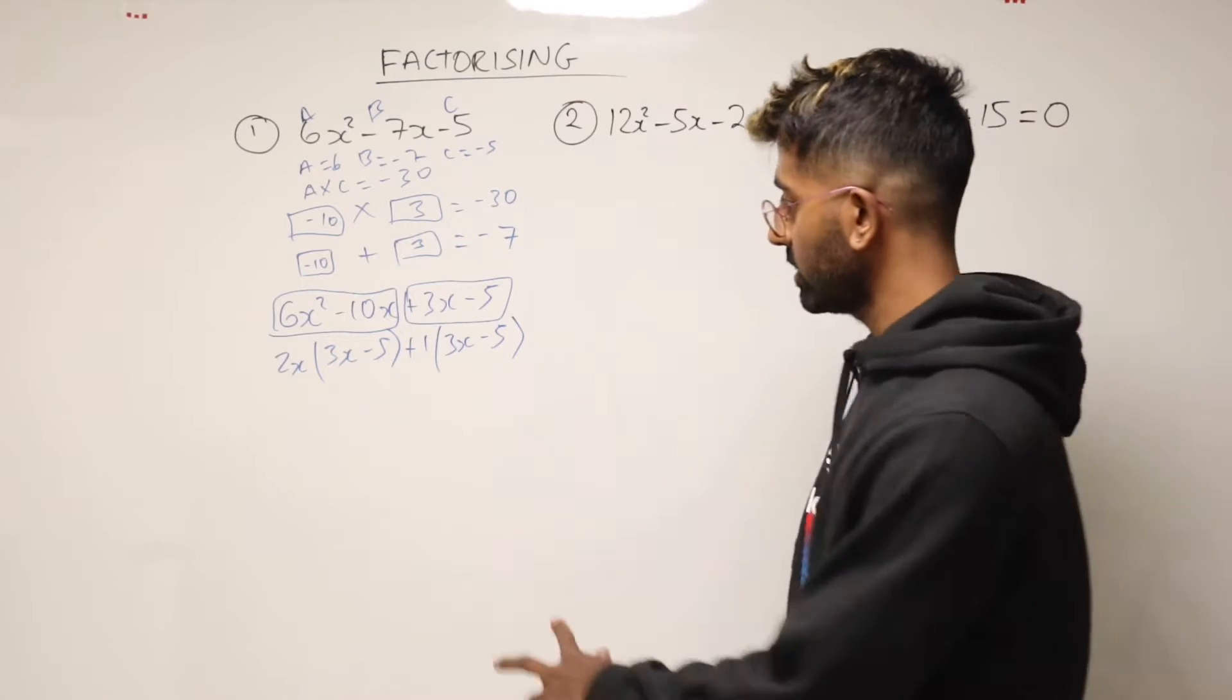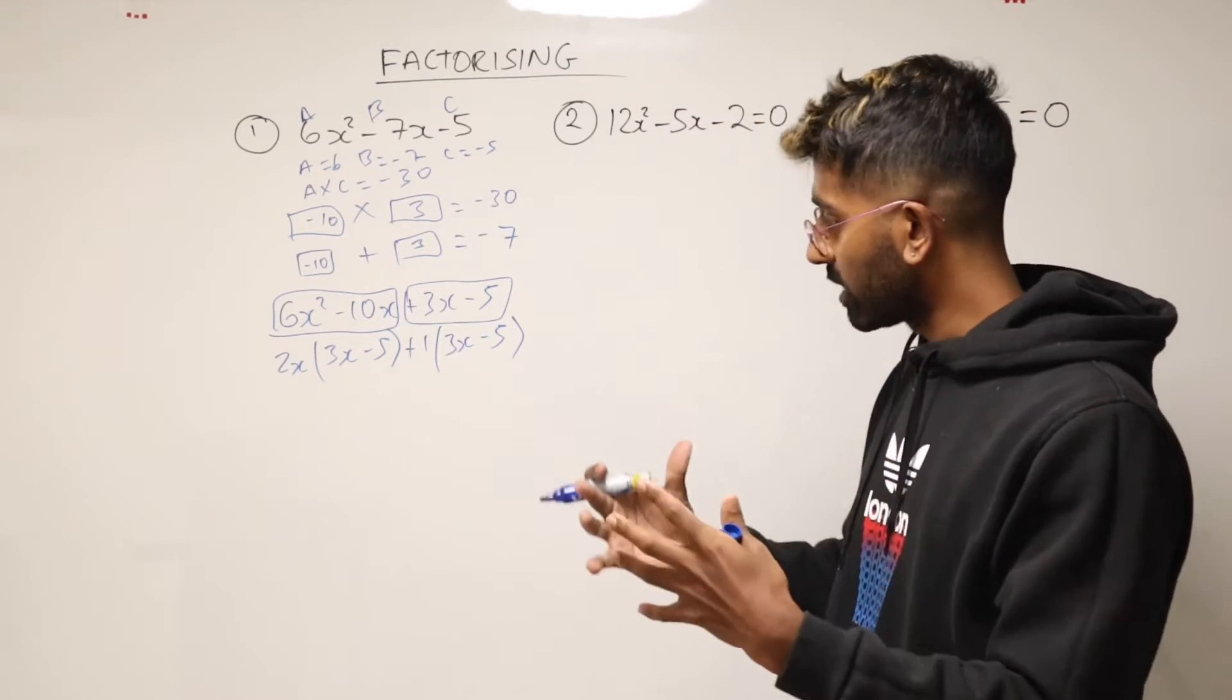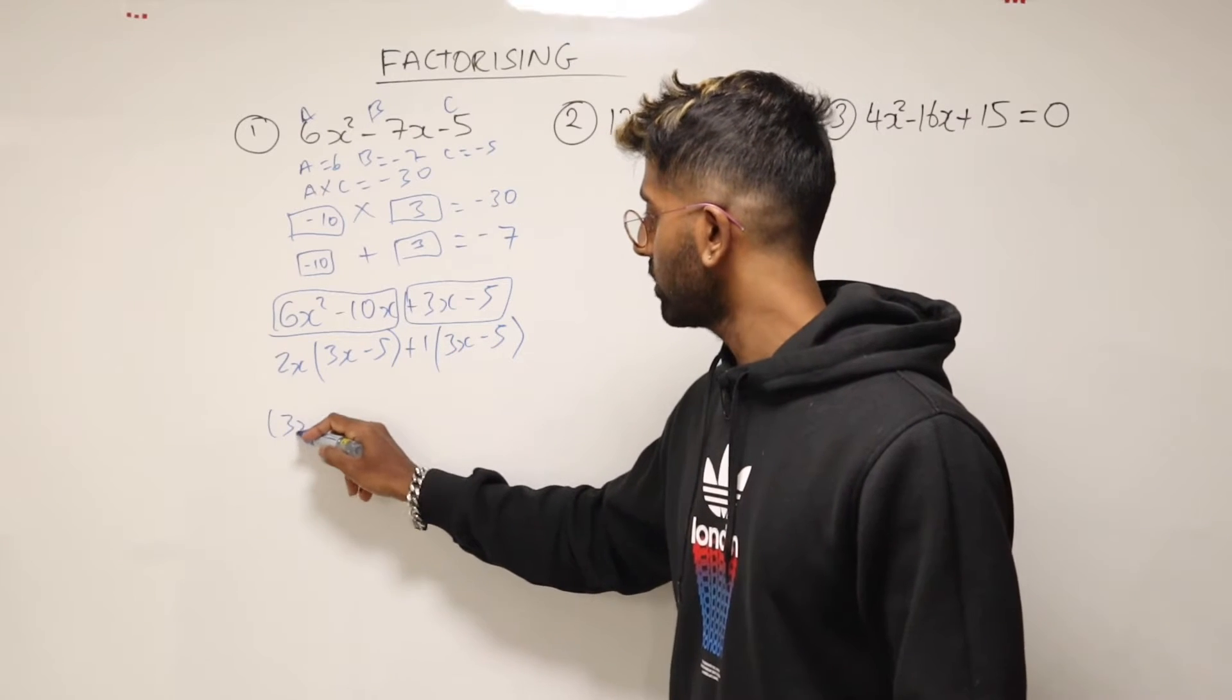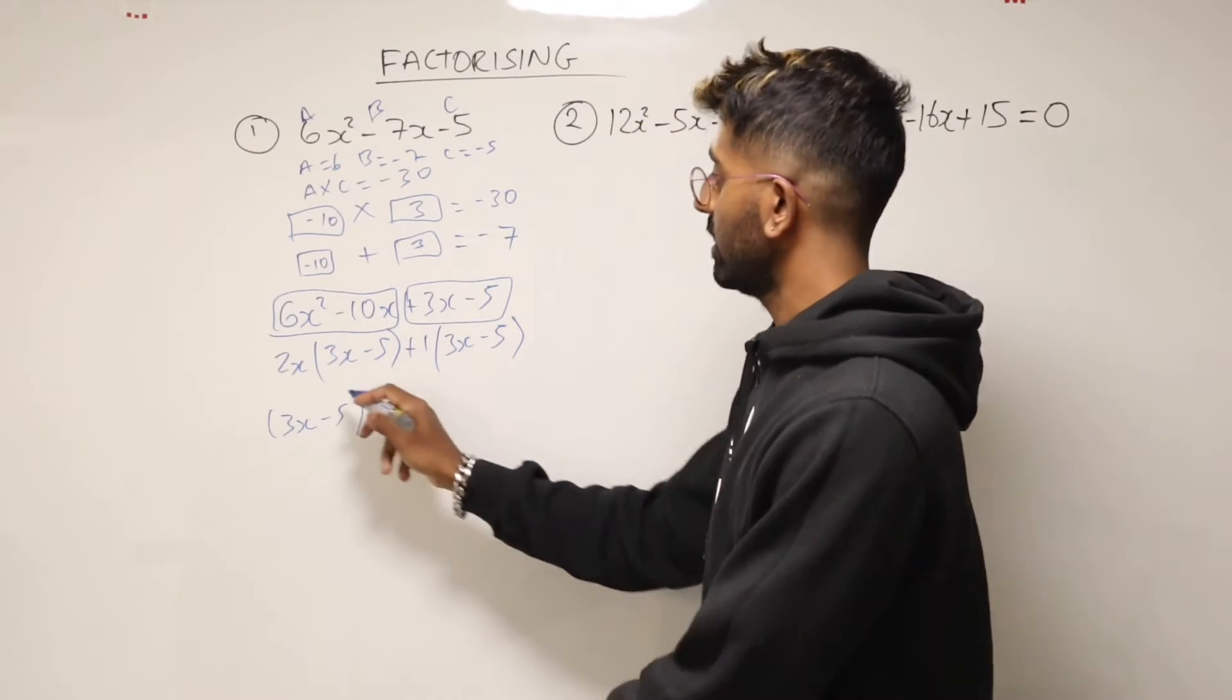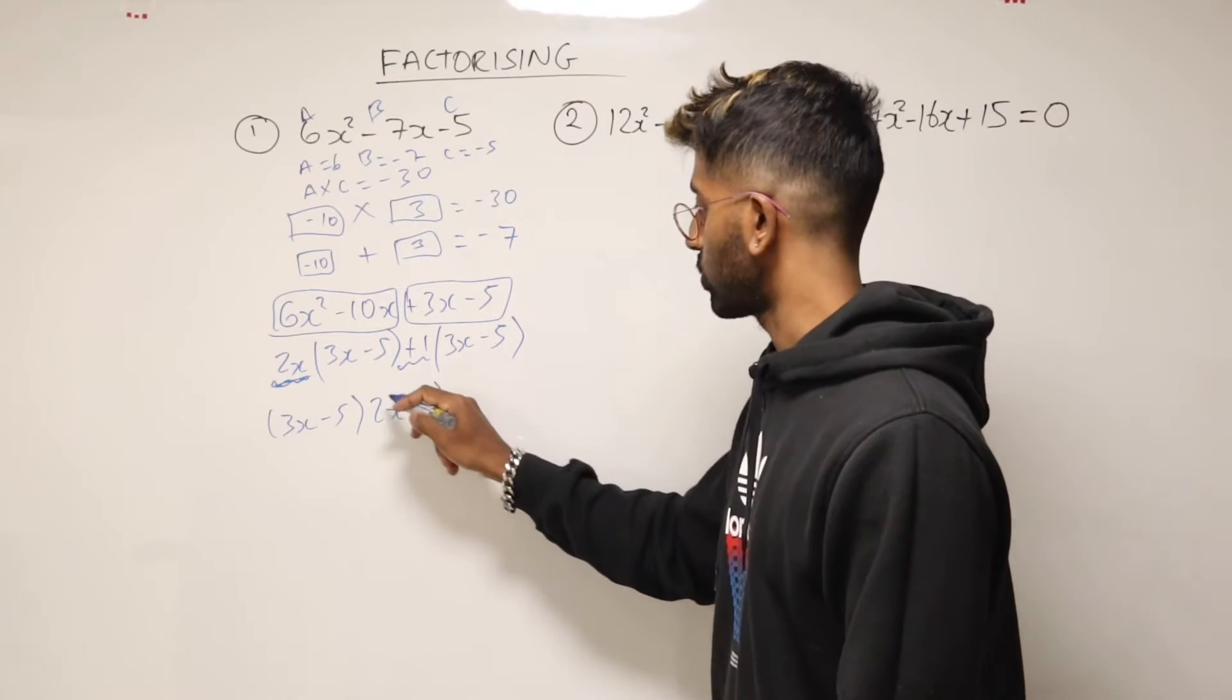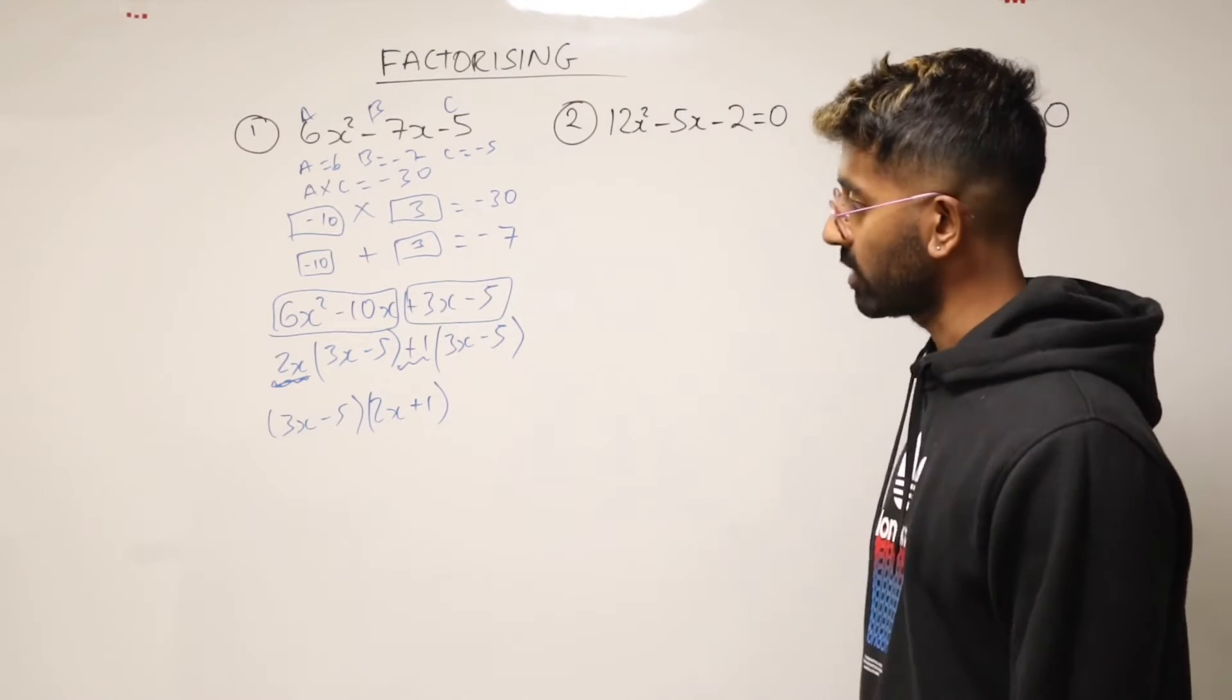And now what we can see is the two brackets are the same. So that's good. It means we've done this correctly. We factorize those two brackets out on the outside. So we have 3x minus 5. And then what's left over is 2x plus 1. And that's going to be our second bracket. So that's that one factorized.